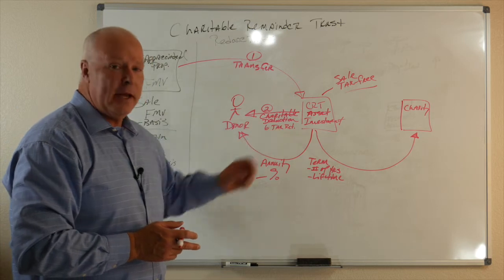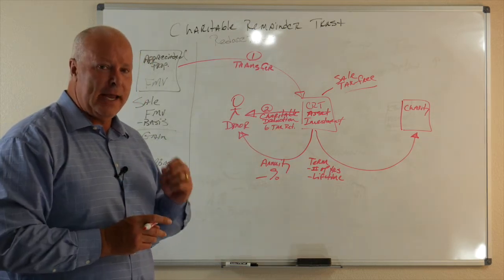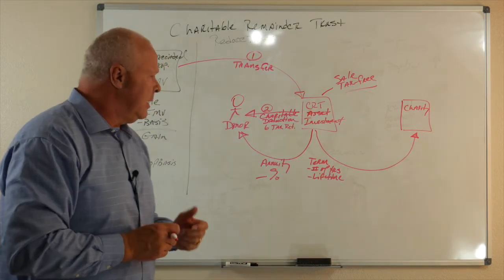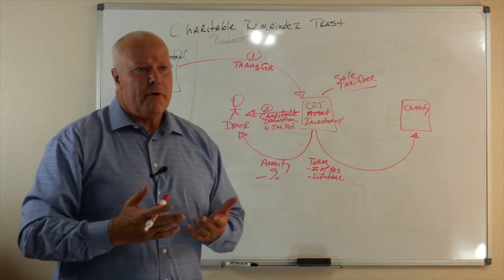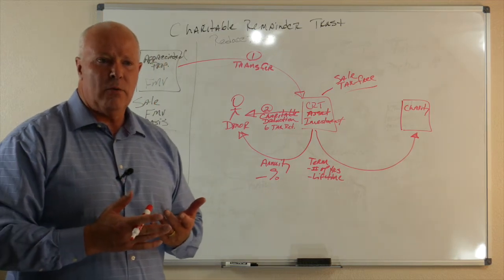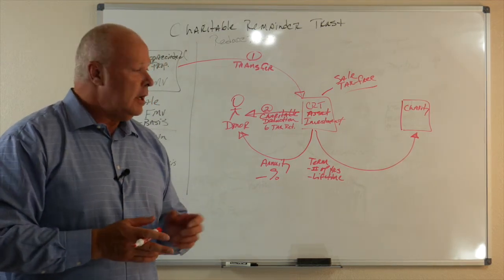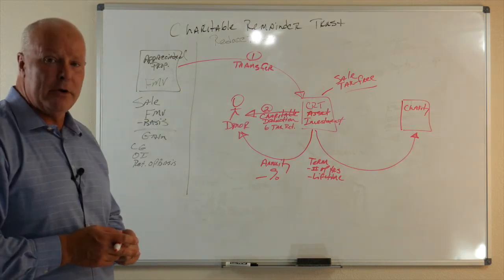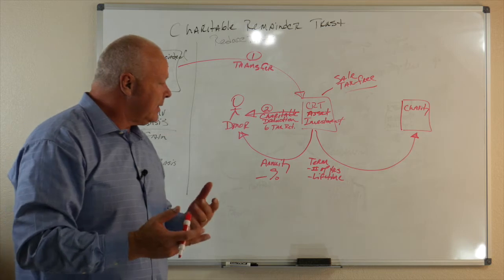But, here's the thing. We've got six tax returns, so if we can't use it this year, we roll it to the next year, the next year, the next year. What I find is, for most clients, we're going to use it up in probably one to three years, because it's usually a high tax year when we set up the charitable remainder trust. But, we want to make sure we get that planning.